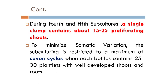During the 4th and 5th subcultures, a single clump contains 15 to 25 proliferating shoots. To minimize somatic variation, subculturing is restricted to a maximum of 7 cycles, and each bottle contains about 25 to 30 plantlets with well-developed shoots and roots. For banana, 7 cycles is enough. For some crops, it may be extended up to 10 or 15 cycles, but for banana, 7 subculturing cycles is sufficient.